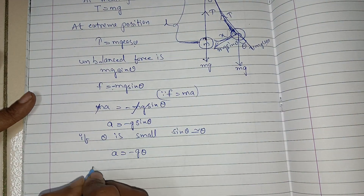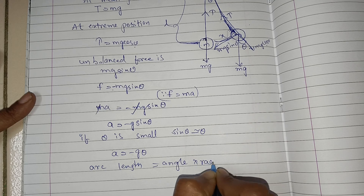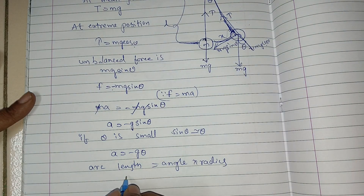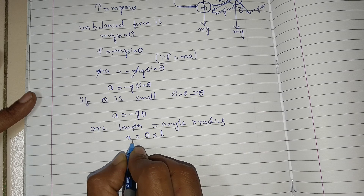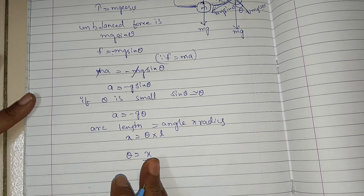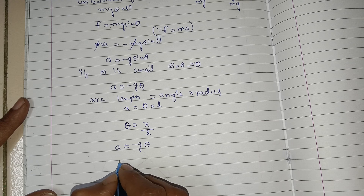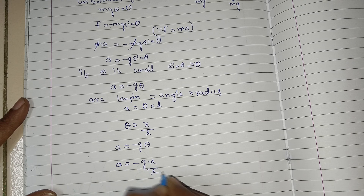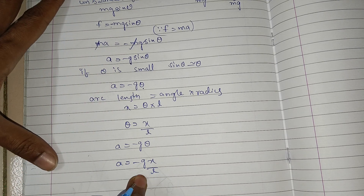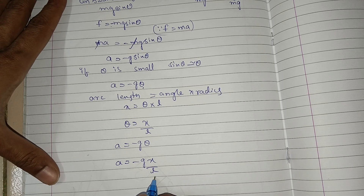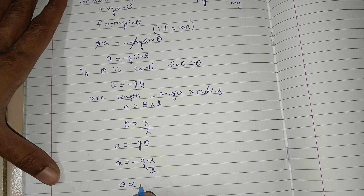We know the formula: arc length is equal to angle into radius. Here arc length is x, angle is theta, and radius is taken as L. So theta is equal to x divided by L. Substituting into A is equal to minus G theta, we get A is equal to minus G into x divided by L. Here G is acceleration due to gravity, which is constant, and L, the length of the pendulum, is also constant. So A is directly proportional to minus x.